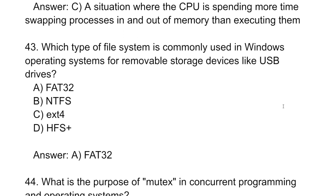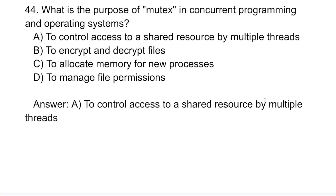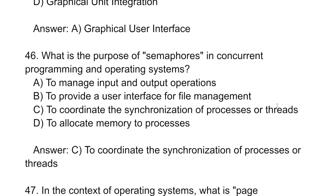Which type of file system is commonly used in Windows for removable storage devices like USB drives? That is FAT32. What is the purpose of a mutex in concurrent programming? A mutex variable is used to control access to shared resources by multiple threads. What does GUI stand for? That is Graphical User Interface. What is the purpose of a semaphore? To coordinate and synchronize processes or threads.